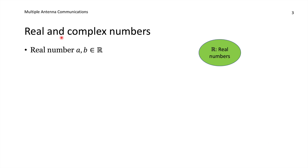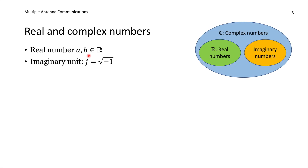Let us start with talking about real numbers — the regular type of numbers that we are used to, anything from minus infinity to plus infinity. They all belong to the real valued set of numbers, or real space. Suppose we take two numbers, a and b, that come from this real set, and then we define what we call the imaginary unit.